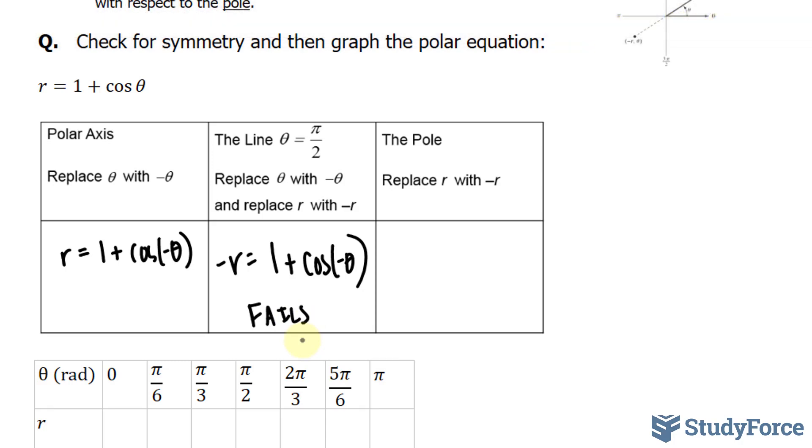To see if it's symmetrical about the origin, I'll replace r with negative r. And as you can see, the equation changes when r is replaced with negative r. Therefore, the graph is not symmetrical with respect to the pole. So this fails as well.